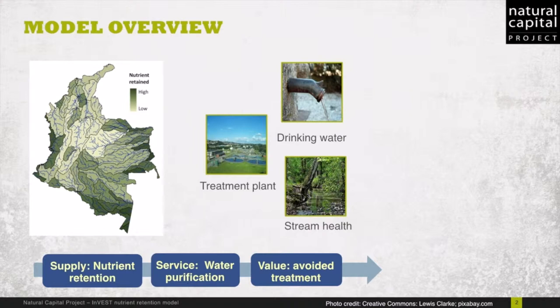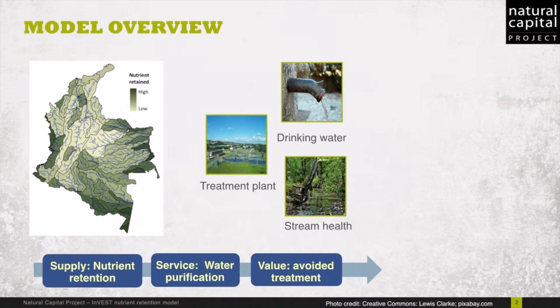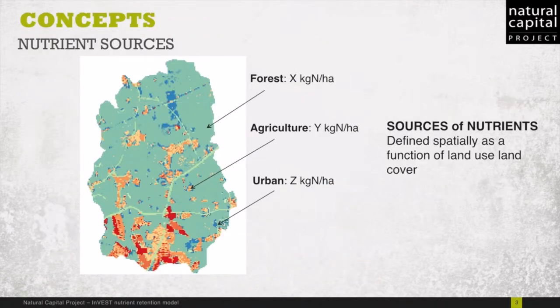Typically we're looking at nitrate, nitrogen or phosphorus that are going to have an effect on water quality. Moving backwards, the service of interest is water purification, and this service is provided by the natural landscape. Depending on the location with regard to the stream or areas of high nutrient production, these natural landscapes are going to retain more of the nutrients. In short, the model helps answer questions like how much nutrient — how much phosphorus or nitrogen — are retained on the landscape, where is it retained, and how does this nutrient retention benefit people.